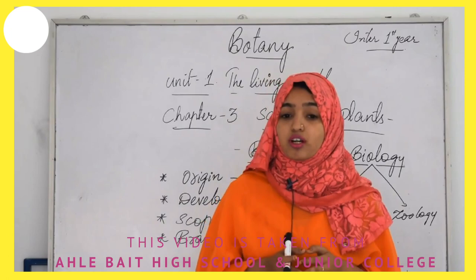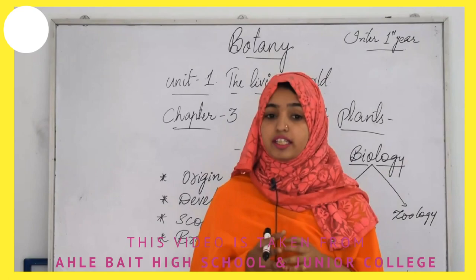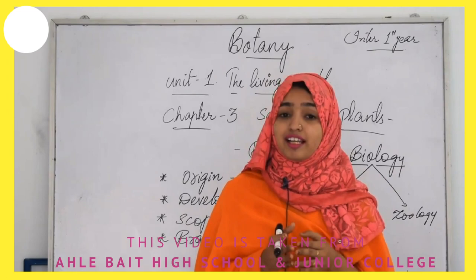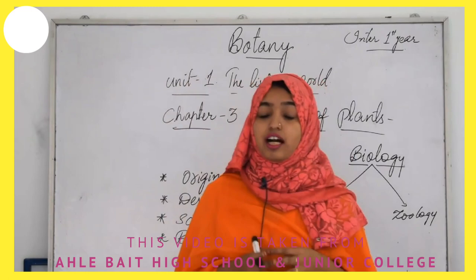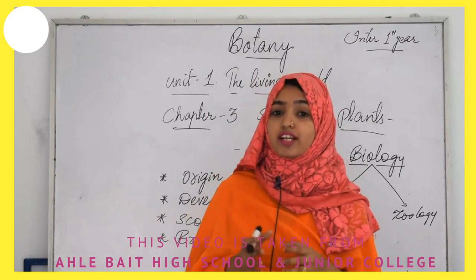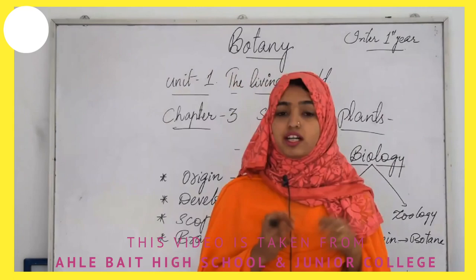In this chapter, the origin of botany as a discipline of biology and its development, scope, and division into specific branches are discussed. Coming to the origin: in Greek, the word 'bous' (B-O-U-S) refers to cattle, and 'boskein' refers to cattle feed. Over time, 'boskein' gave rise to 'botane,' which finally gave rise to the word 'botany.'